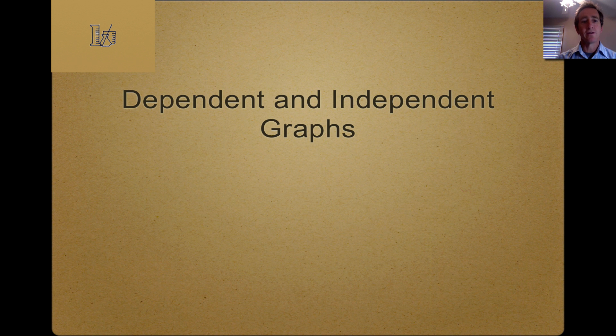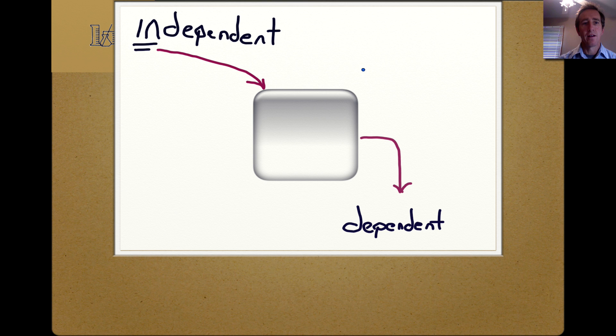Here are some simple ways to remember graphing dependent and independent variables. The independent variable is what goes in, it's what causes something to happen, and the dependent variable is the result.